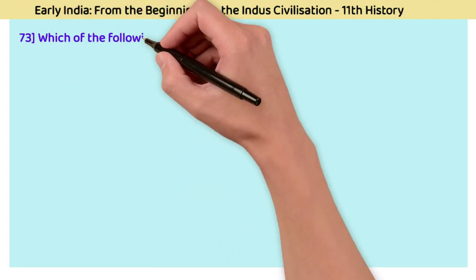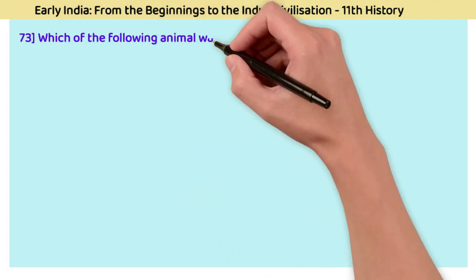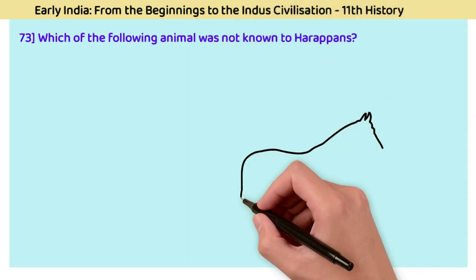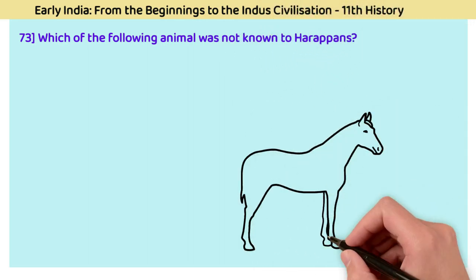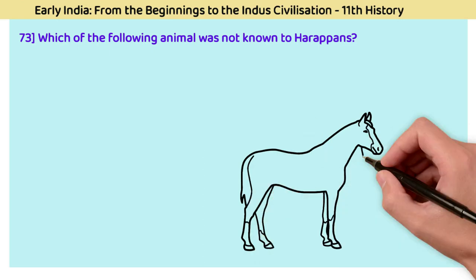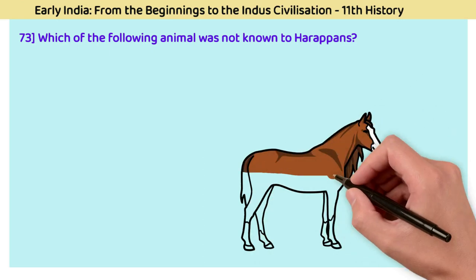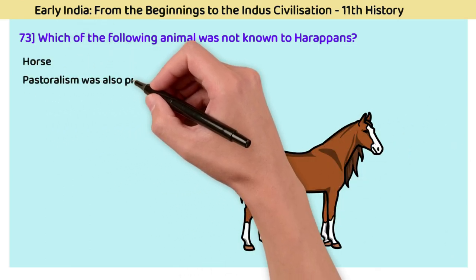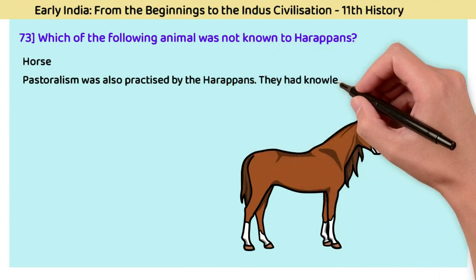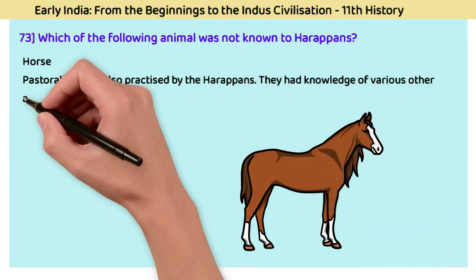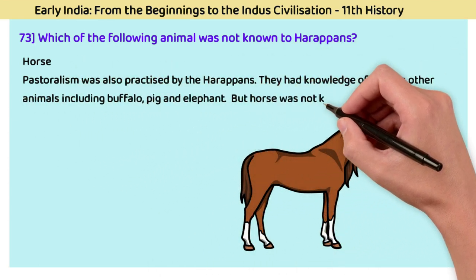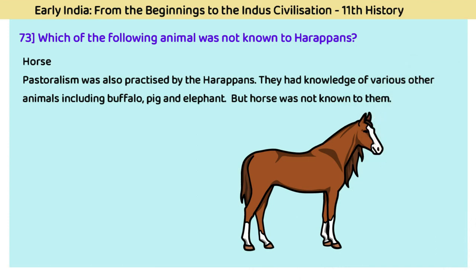Question 73: Which animal was not known to Harappans? The answer is the horse. Pastoralism was also practiced by Harappans. They had knowledge of various animals including buffalo, pig, and elephant, but the horse was not known to them.